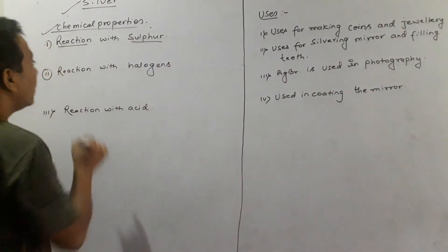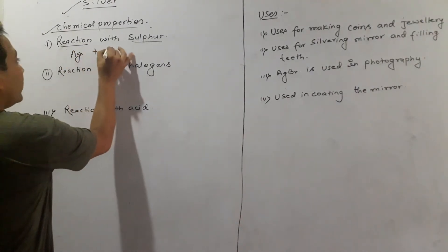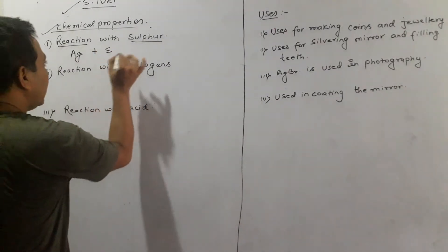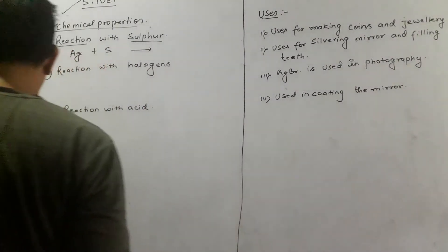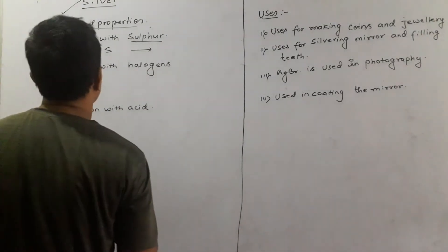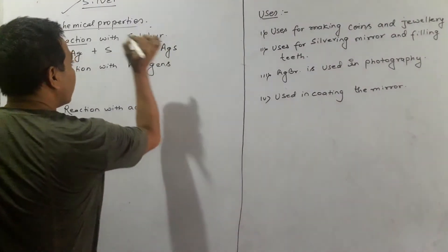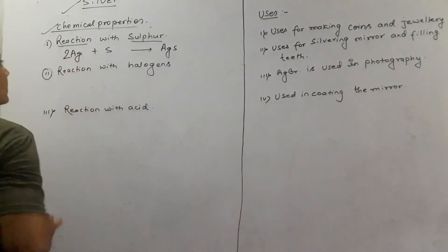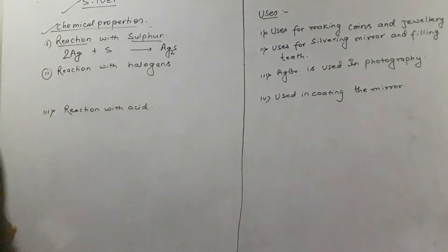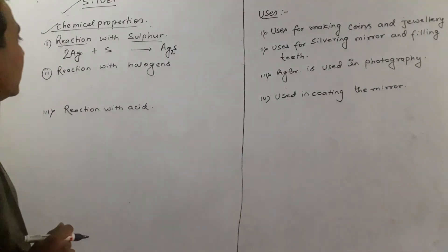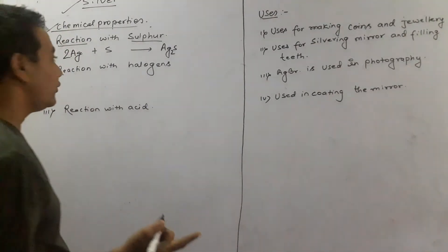The first one is the reaction with sulfur. When silver reacts with sulfur, what will be produced? When silver reacts with sulfur, it produces silver sulfide. So this is the reaction with sulfur.